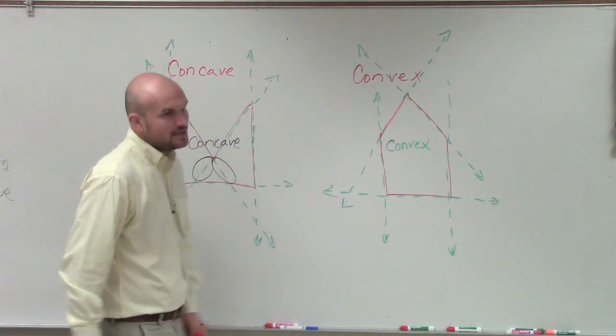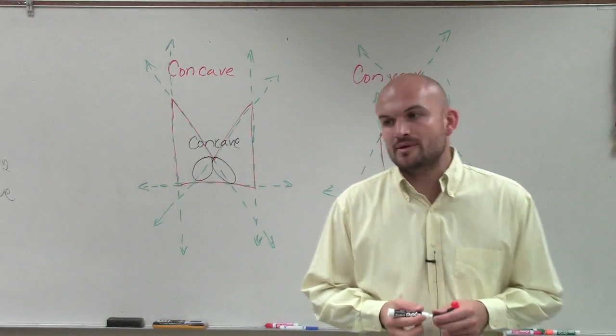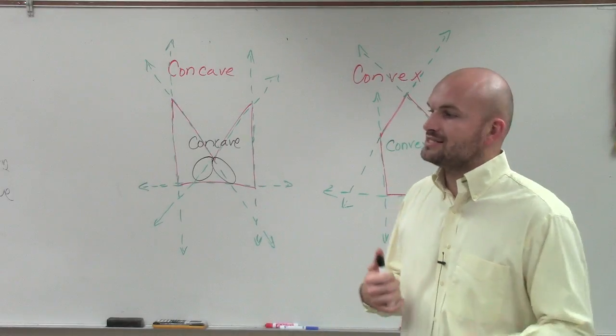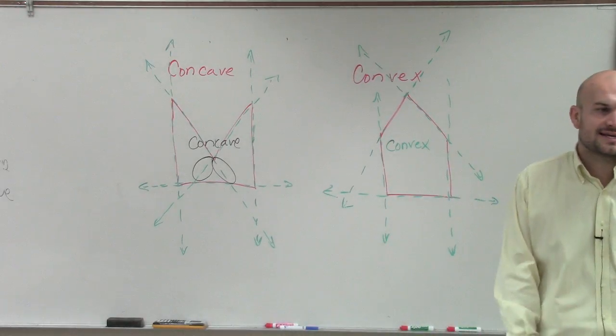So when you draw lines of the perimeter of an angle and it crosses the interior, we call that concave.